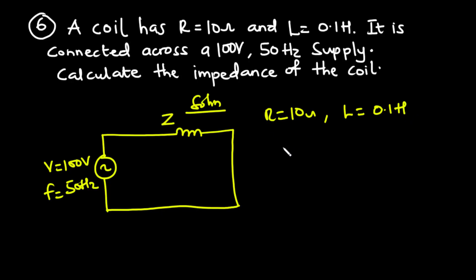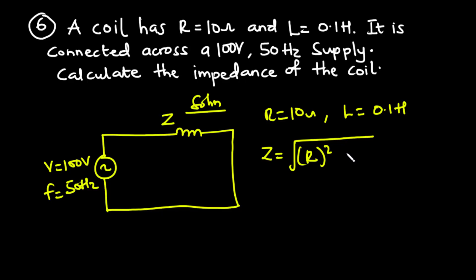Notice that this circuit is a series circuit consisting of a resistor and an inductor. To find the impedance of such a circuit, it is given by the formula Z equals the square root of R squared plus XL squared, where R is the resistance and XL is the inductive reactance.